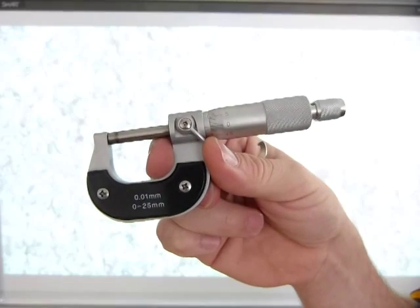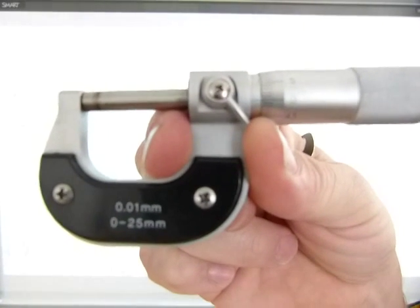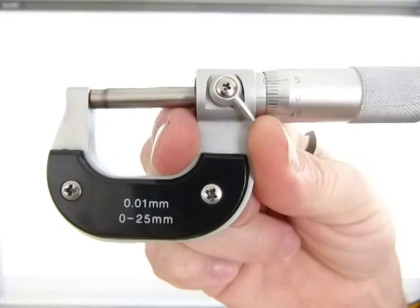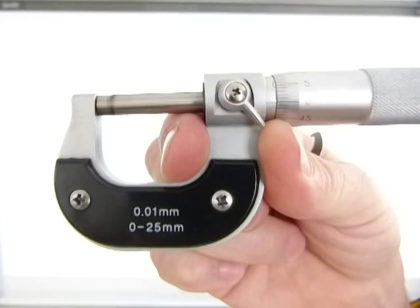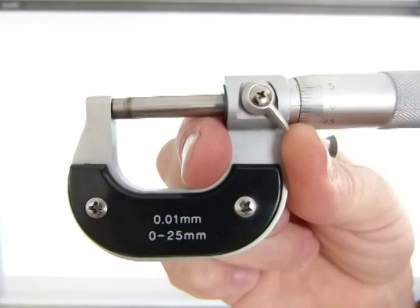This is a metric micrometer. I'm going to show you how to read it and how to use it. You can see it measures from 0 to 25 millimeters and its precision, the smallest marked increment, is one hundredth of a millimeter.